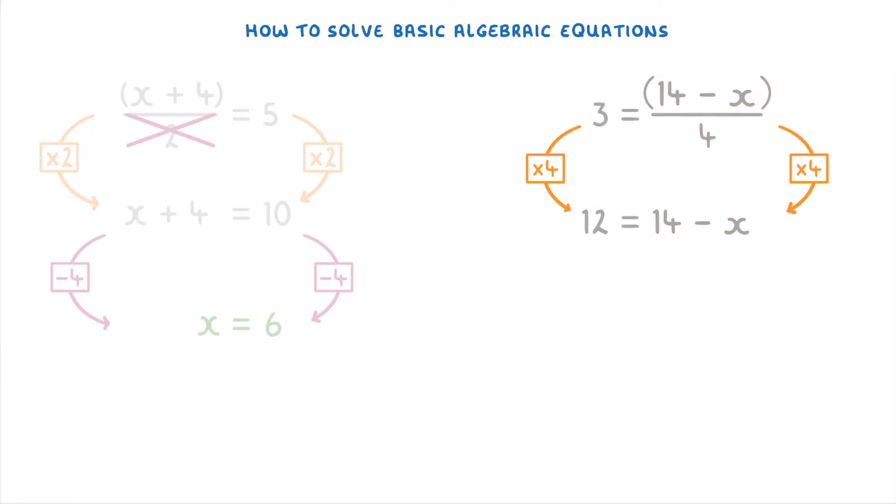Next, you're going to want to get rid of the 14. So you can subtract 14 from both sides, which will give you minus 2 equals minus x. And then to make the x positive, we can just multiply both sides by minus 1 to get 2 equals x. So x is 2.